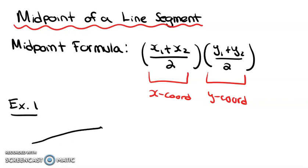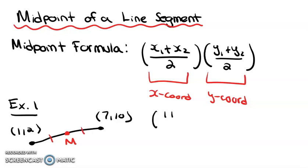So in example 1, we're going to have a line segment with two points on either end. Our first point is going to be (1, 2) and our second point is going to be (7, 10). Our job is to find out what the midpoint is — that'll divide the segment evenly in half. So we're going to say 1 plus 7 over 2 for our x coordinate.